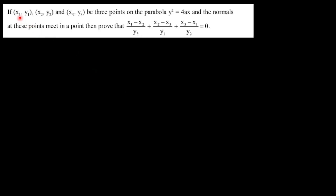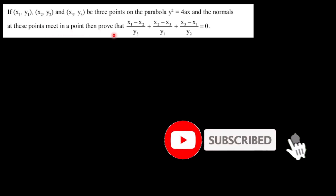Hello everyone. Today's question is: if x1 y1, x2 y2, and x3 y3 are three points on the parabola y² = 4x, and the normals at these three points meet at a common point, then we have to prove that (x1 - x2)/y3 plus similar terms is equal to zero.